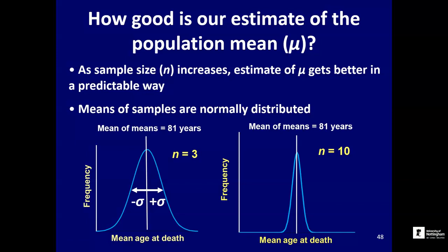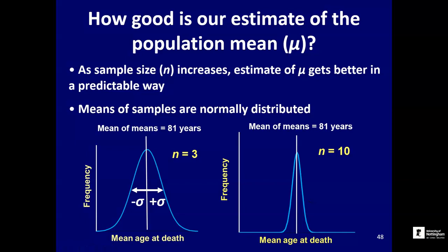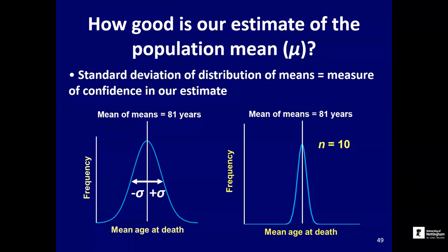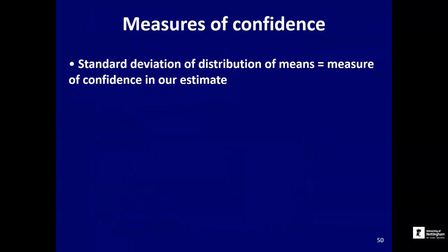The means of samples are much more variable with small sample sizes. When we plot the same distribution of means for a sample size of 10, those means are much more tightly clustered around the true underlying population mean of 81 years. The standard deviation of that distribution of means has got much smaller as a result of increased sample size and increased confidence in our estimates. We can use the standard deviation of this distribution — the degree of spread in this bell curve — to describe our confidence: large spread means low confidence; small spread means high confidence.